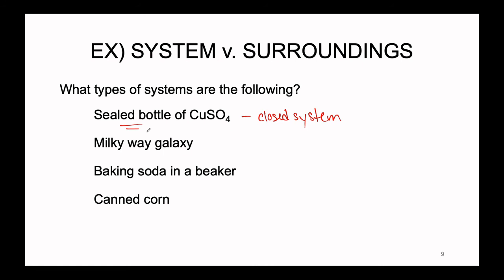Next: the Milky Way galaxy. Despite its enormous size, it is still not equal to the entire universe, so it cannot be an isolated system. The question is whether it exchanges matter with its surroundings — and it does. We lose and gain stardust all the time, so the Milky Way galaxy is an open system.